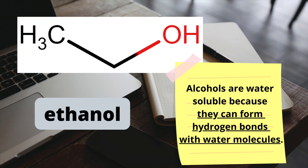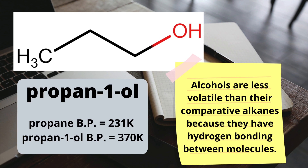Since alcohols have an oxygen directly bonded to a hydrogen as part of their structure, they can form hydrogen bonds to water molecules, which means alcohols are soluble in water. Since they have hydrogen bonding as their strongest type of intermolecular bond, we find that alcohols have much higher boiling points than their comparative alkanes.